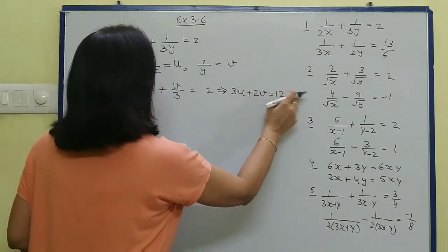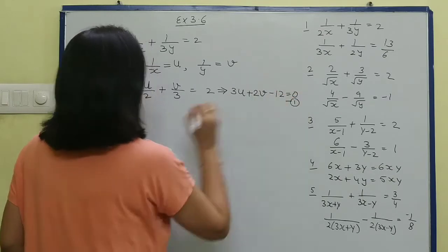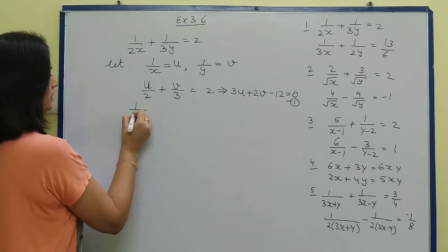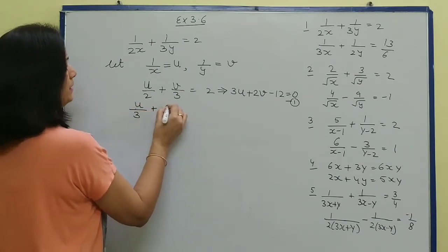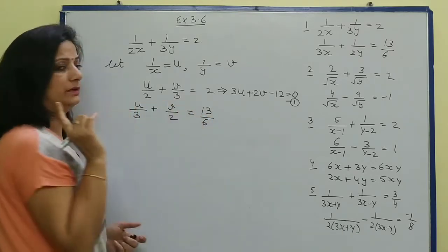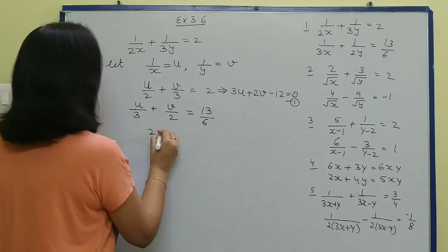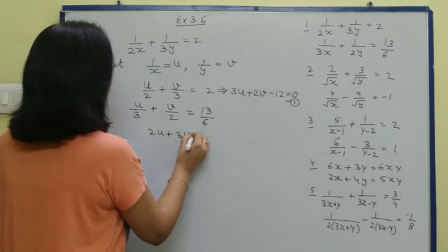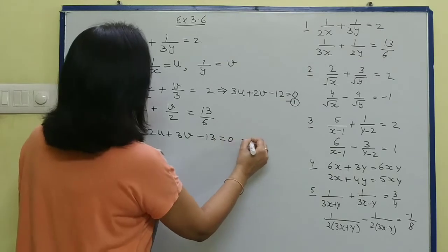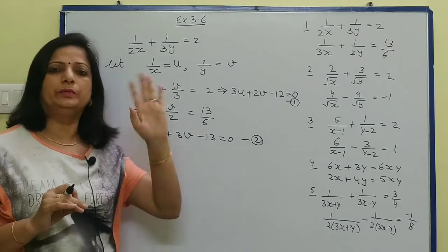We can write the first equation as 3u - 2v - 12 = 0. The second equation takes the form 1 upon 3·u + v upon 2 = 13 upon 6. Taking LCM 6 again, it simplifies to 2u + 3v - 13 = 0. This is our second equation. There are three methods available; you can apply any, but the easiest is cross multiplication.